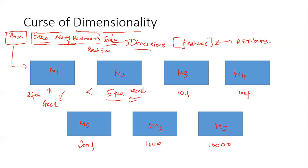Similarly, I create model M3 and give it ten independent features from the dataset along with the output. Model M3 also gives a good accuracy — ACC3 — which is greater than ACC2, which is greater than ACC1. So as we increase features up to this point, accuracy keeps improving.